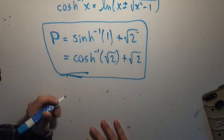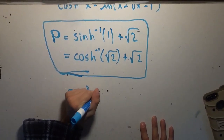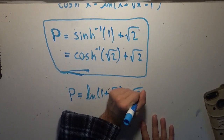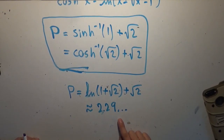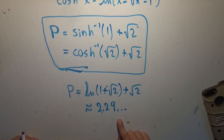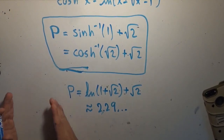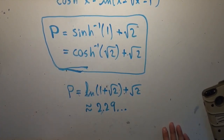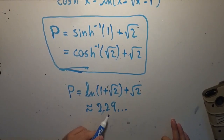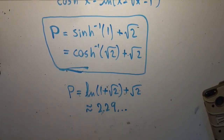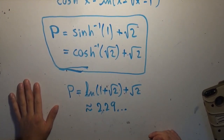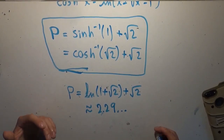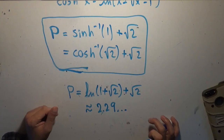One more time: the universal parabolic constant equals the natural logarithm of 1 plus the square root of 2, all plus the square root of 2, and this is about 2.29. It is also 6 times the average distance from any point in a unit square to the center — so if you divide this number by 6, that is the average distance from a random point in the square to its center. I hope this was as enjoyable for those watching as it was for me. It's a lovely fact, and I'm just really happy that I got to incorporate all three different kinds of conic sections into this problem.